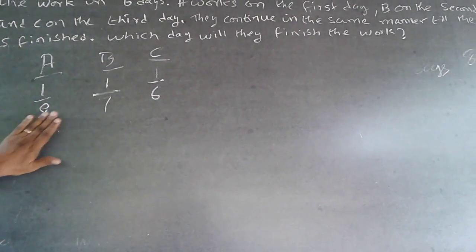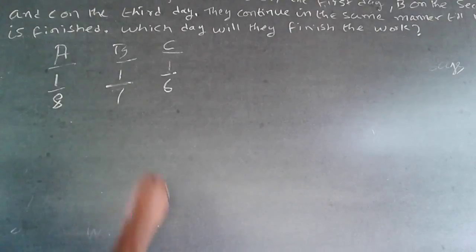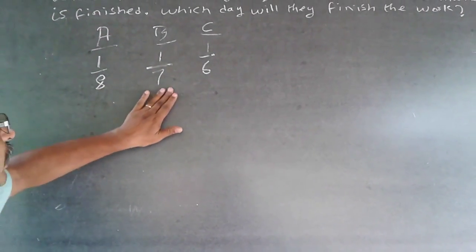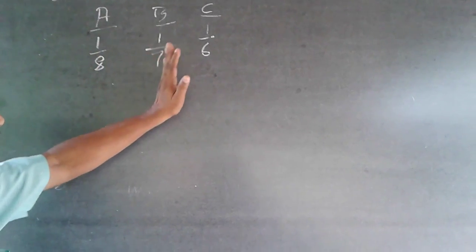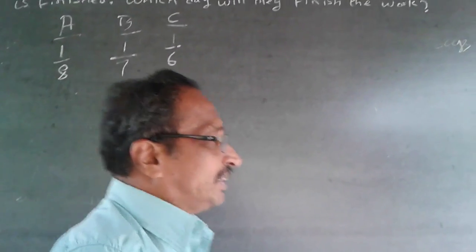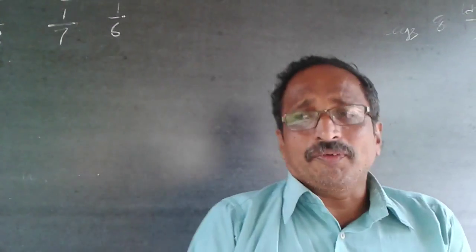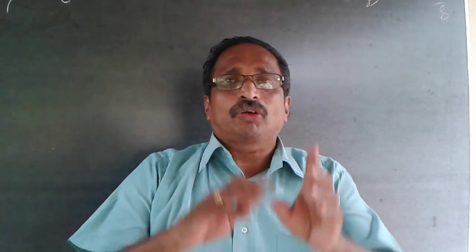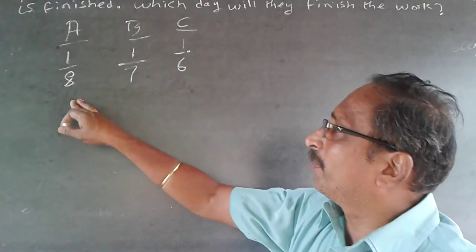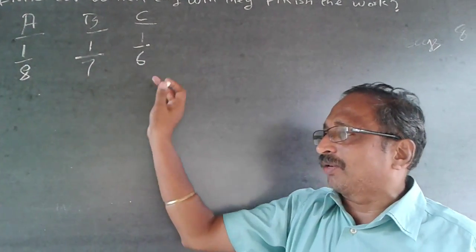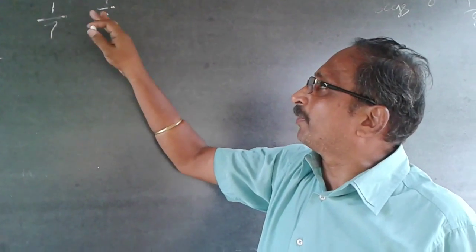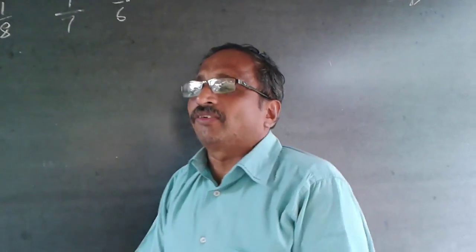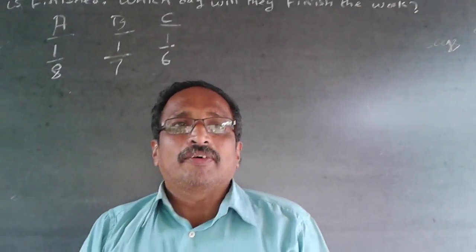A does the work on the first day, B on the second day, C on the third day, and it continues: A on the 4th, B on the 5th, C on the 6th, then 7, 8, 9, and so on. The total work done is always 1. So you subtract: 1 minus 1/8, minus 1/7, minus 1/6, then again minus 1/8, minus 1/7, minus 1/6 — you go on till it reaches 0. That day the work will be over. But it is a difficult way of doing it.